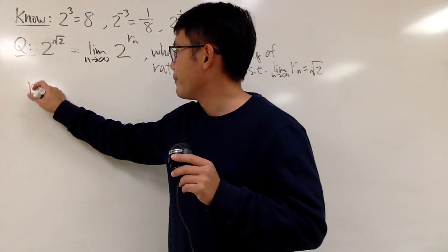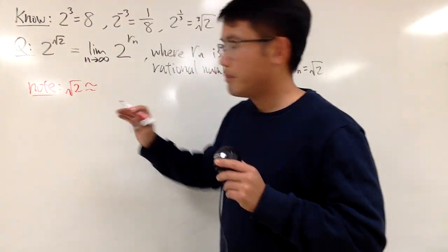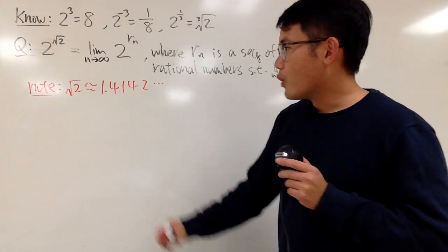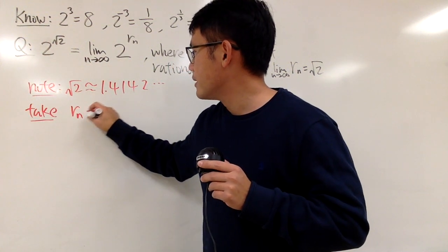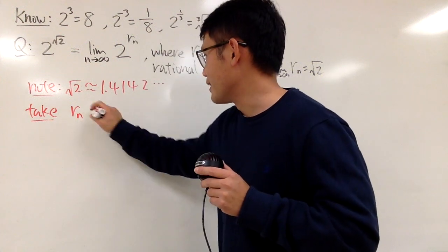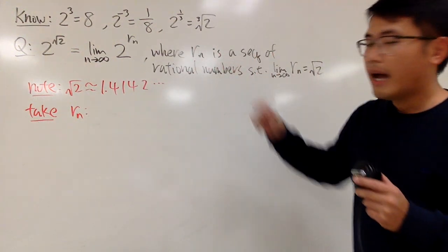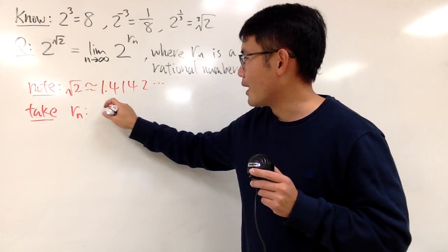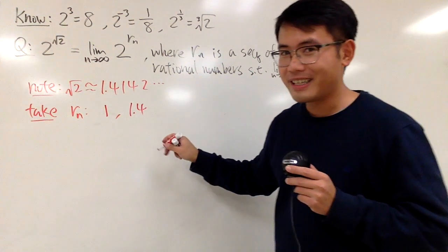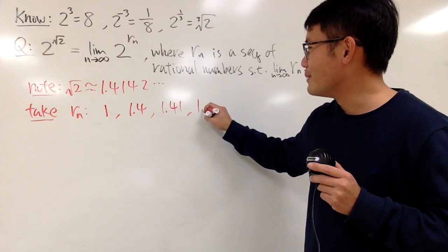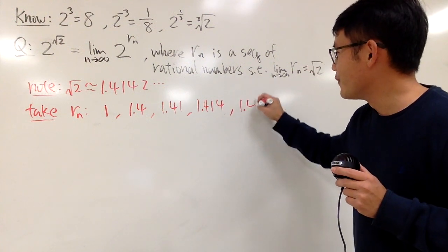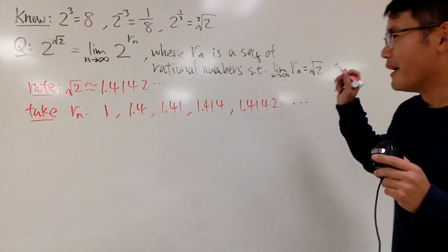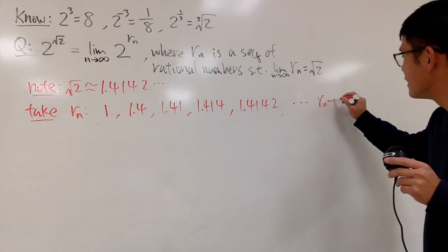Note: square root of 2 is approximately 1.4142 and so on. What we can do is take rn to be a sequence of rational numbers like this. The first number in the sequence is 1, next is 1.4, next is 1.41, next is 1.414, next is 1.4142, and so on. This right here is the sequence of rn, and notice rn does approach square root of 2.